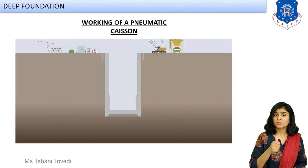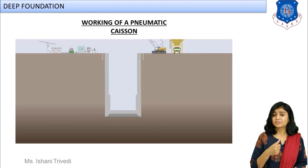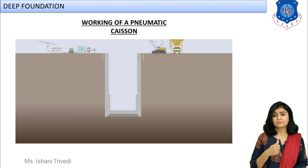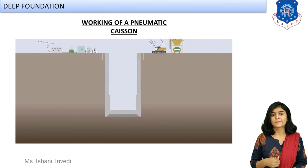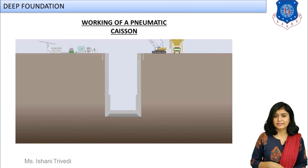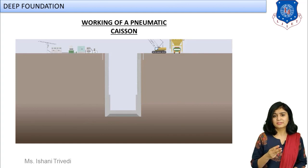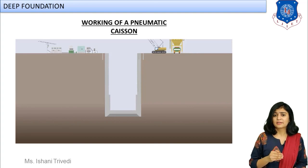One drawback of the pneumatic caisson is that workers are exposed to compressed air containing nitrogen along with oxygen. As a result, they can suffer from a disease known as caisson sickness or caisson disease, which we will discuss in detail in the next session. We have now discussed all three different types of caissons — please understand the construction and procedure by looking at the videos in the lectures. That's it for today — thank you.